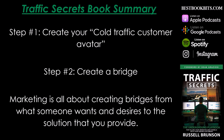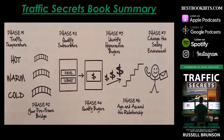Looking at the image, you can see from phase one, you have traffic temperature: hot, warm, and cold. Phase two: your pre-frame bridge. Phase three: qualify subscribers by getting them to submit their email. Phase four: qualify the buyers. Phase five: identify hyperactive buyers. Phase six: age and ascend the relationship. And phase seven: change the selling environment.